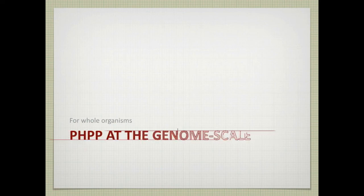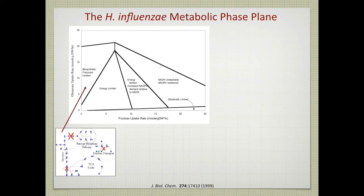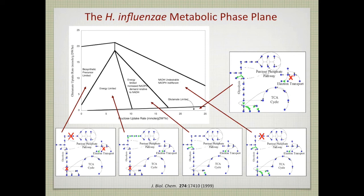This is actually the first phase plane that was published, for Haemophilus influenzae, with the carbon source on the x-axis and the nitrogen source on the y-axis. You can look at the metabolic states in each phase and interpret them. The triangular shape close to the y-axis corresponds to carbon limitation, and that close to the x-axis corresponds to nitrogen limitation. The other three phases in between are either energy limitation or different types of redox limitation.